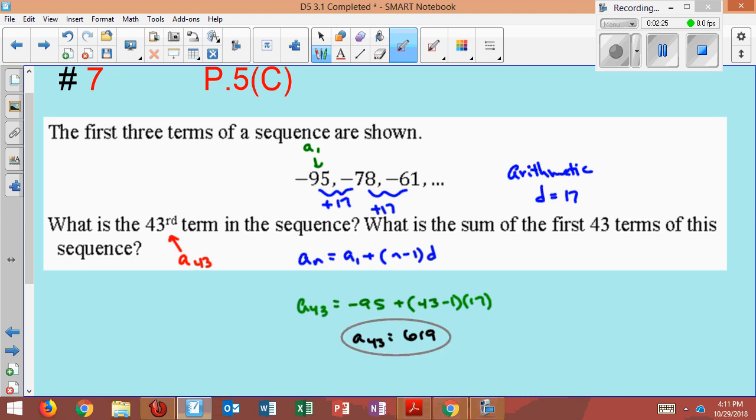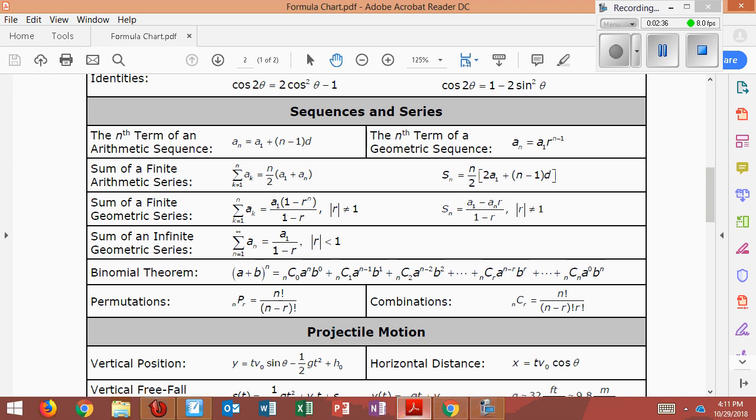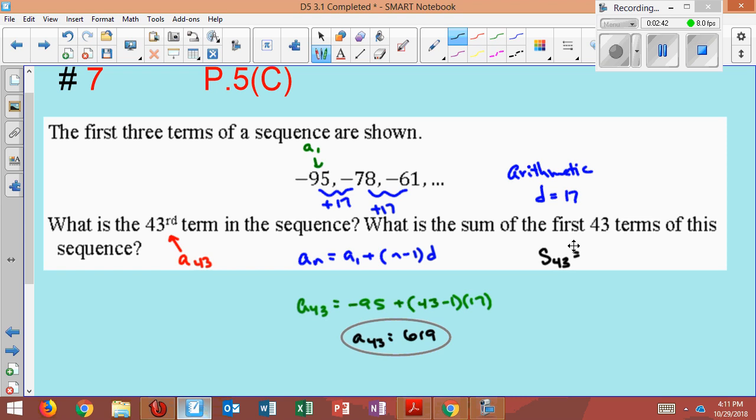Now it also says to find the sum. So S sub 43. We could do it a couple different ways. We could use, now that we know the last term, we could use this formula here. S sub 43 would equal n over 2. Let me write this as S sub n would equal n over 2 times A sub 1 plus A sub n.